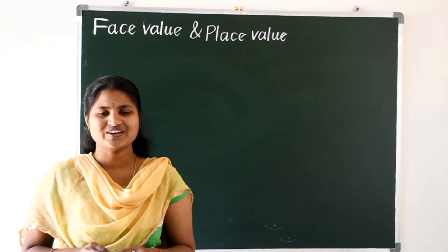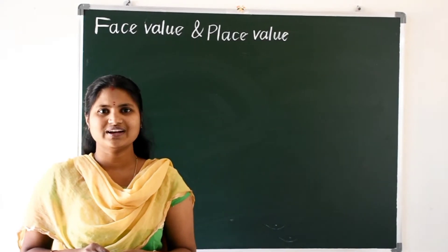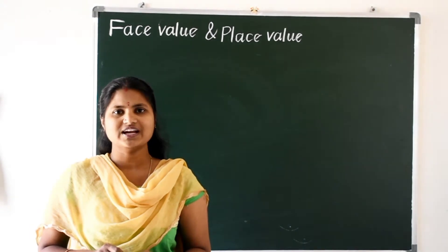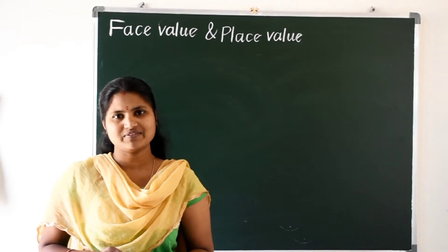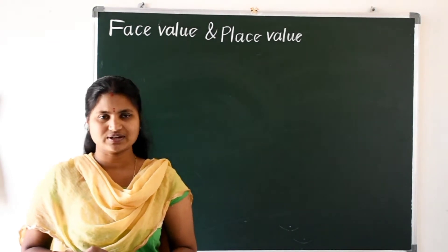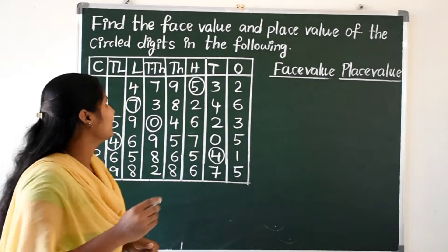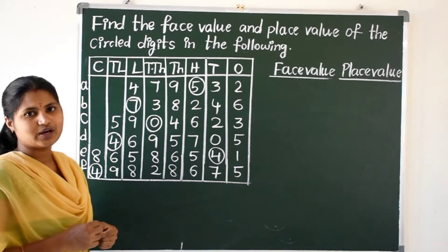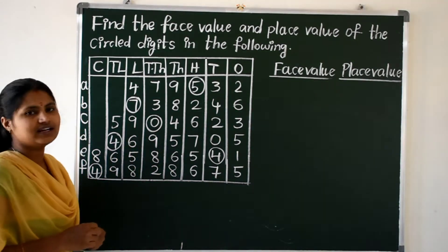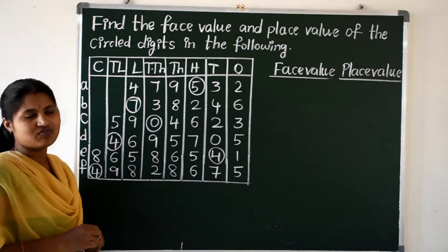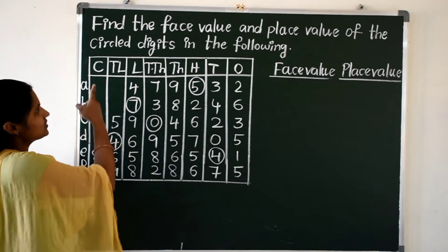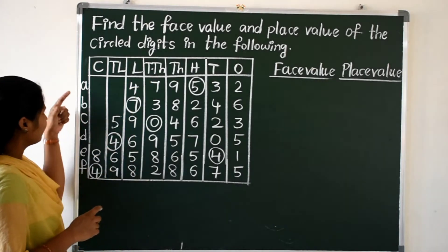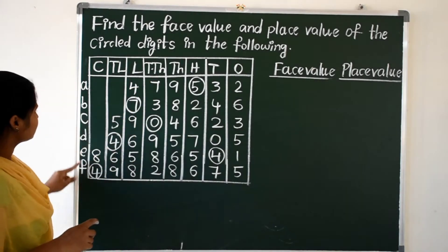Hi children, today we are going to learn about face value and place values. We have already learned about this in previous classes. Here we have one activity: find the face value and place value of the circled digits in the following. There are six questions.